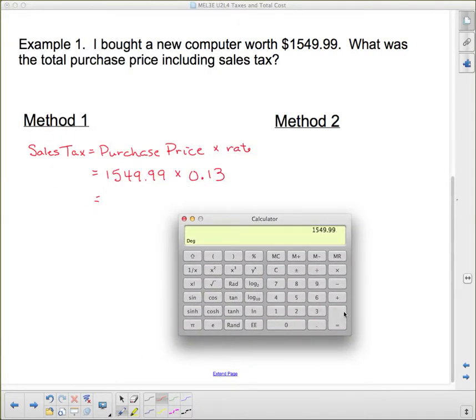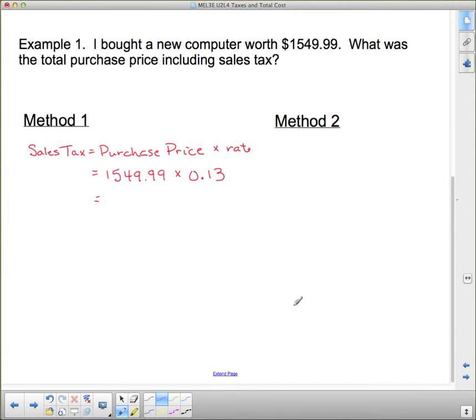We'll pull out the calculator to do that. $1,549.99 times 0.13 gives me sales tax of $201.50 when I round this up. It comes to 0.498. Since we want to round it to this number, we look at the next number and it's going to round up. So this 49 becomes 50. So $201.50.